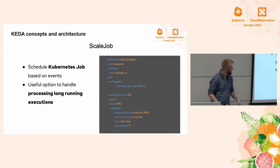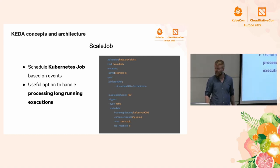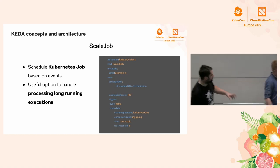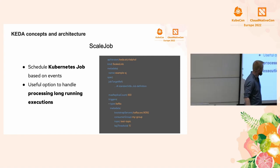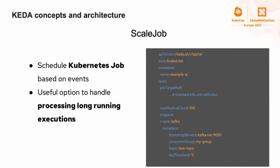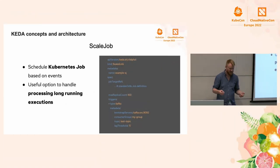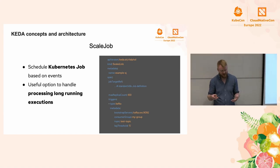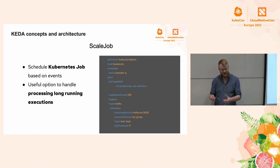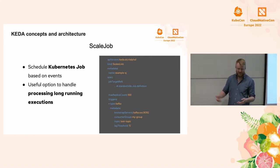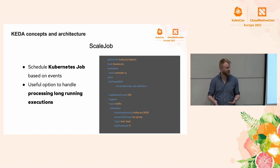This is a ScaledJob example — the other CRD for spawning new Kubernetes Jobs. It's very similar: you put your standard Kubernetes Job specification, and based on events on the system it creates new Kubernetes Jobs. This is very good for batch processing, especially for long-running executions, because with HPA, once the messages are picked up and processing starts, the metrics may already be down and HPA might scale down your application mid-process. With ScaledJobs you just spawn new jobs for processing.